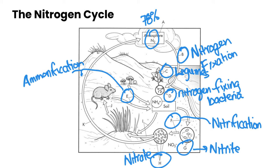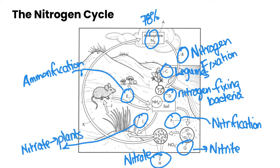From here, nitrate can be consumed by plants — this is label I — where the nitrate is consumed by plants, and they use it to create various products. Then our animals, mostly our herbivores, consume the plants and digest those products, using the nitrogen to build proteins, to build their DNA, and to give them energy.